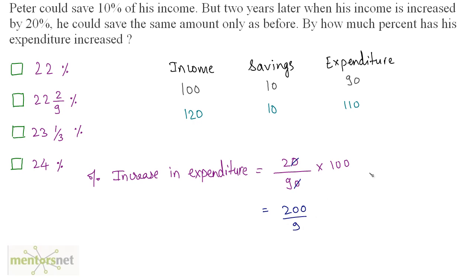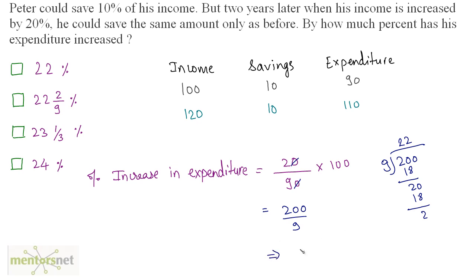Dividing 200 by 9: 9 times 22 is 198, remainder 2. So the result is 22 and 2 by 9 percent. That is our answer, option B: the expenditure increased by 22 2/9 percent.